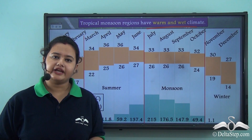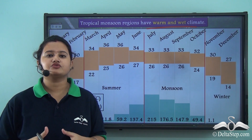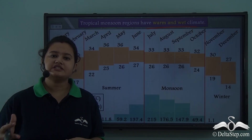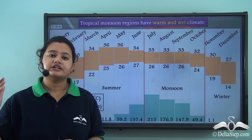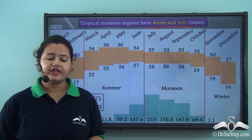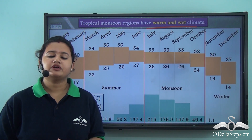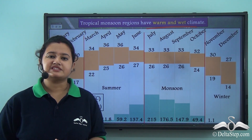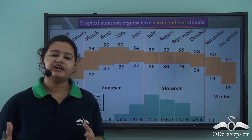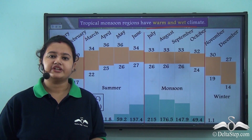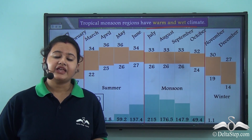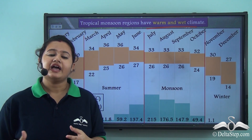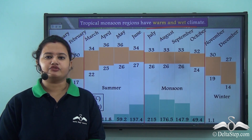This brings us to the end of today's lesson on tropical monsoon regions. We discussed that it is located between 10 to 30 degrees north and south of the equator. We then discussed the climate in detail, seeing that rainfall is mostly caused by monsoon winds that reverse direction seasonally. Finally, we established that tropical monsoon regions experience a warm and wet climate. In our next video, we will discuss how this climate influences the vegetation and lifestyle of the people living in this region.